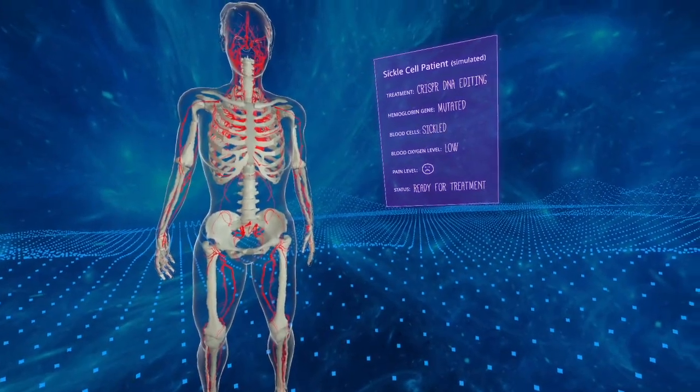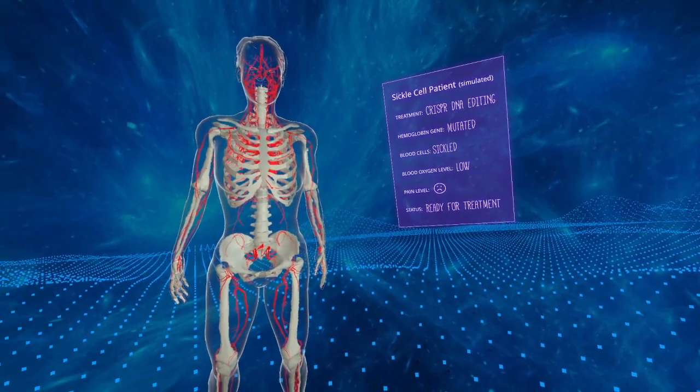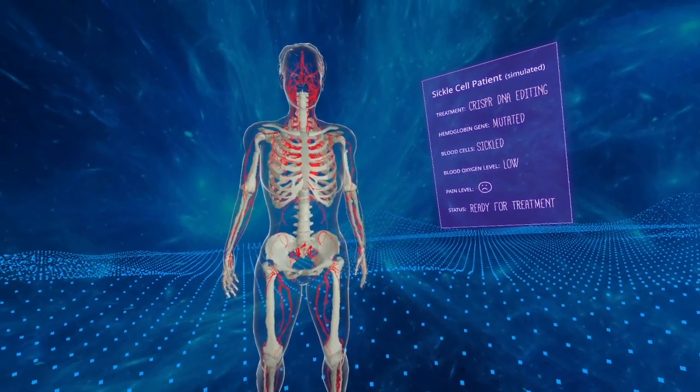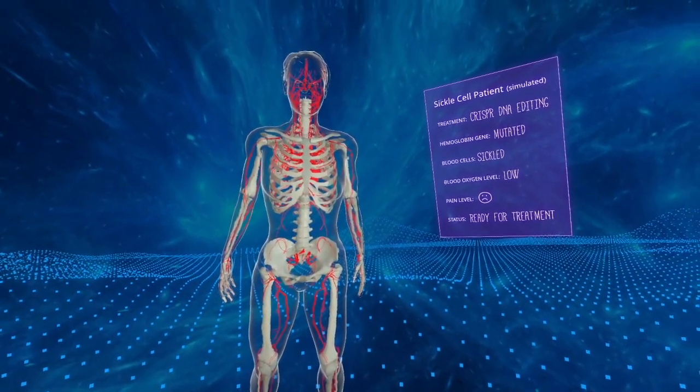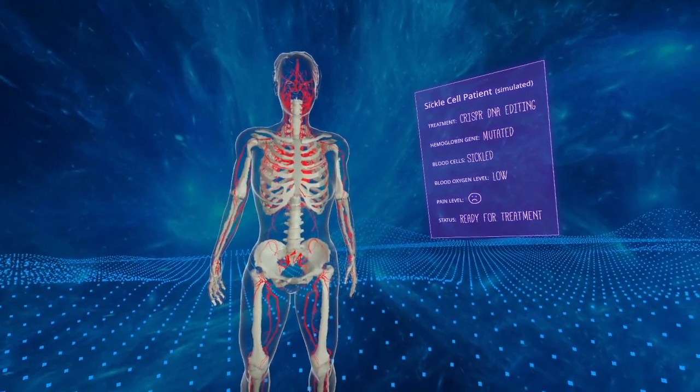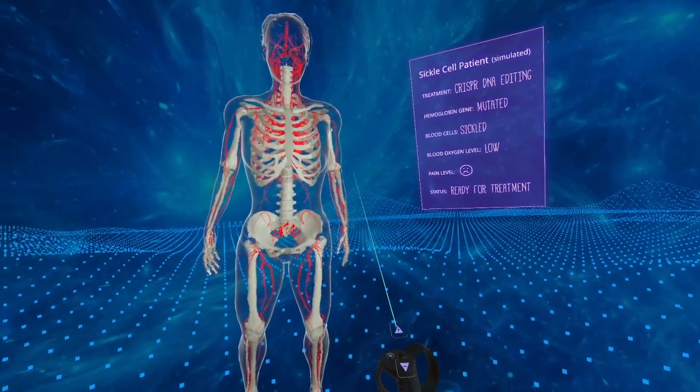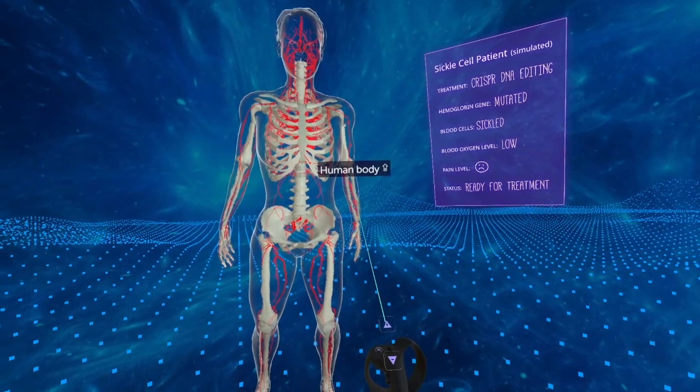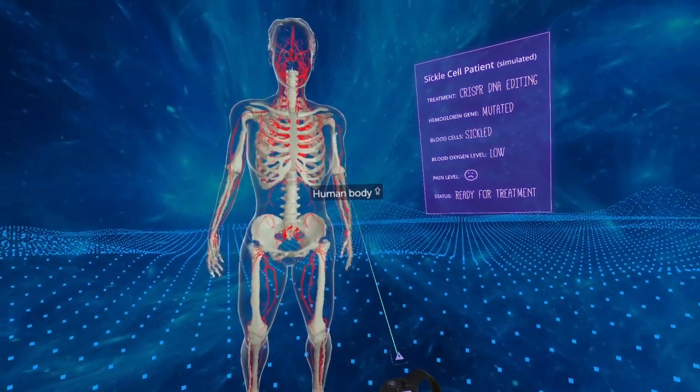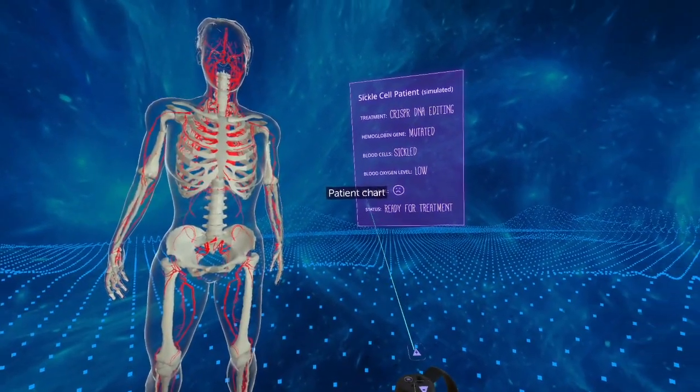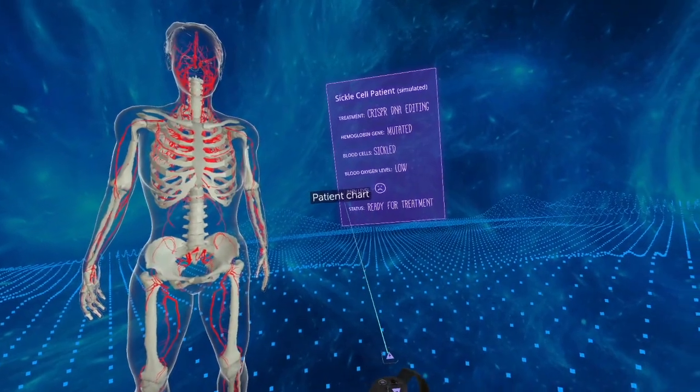Now that we've got everything set up, it's time to dive into the module. In front of you, you'll see a human body which is a simulation of someone with sickle cell disease. You'll notice that if you point at the body with the laser, you'll see a label come up - same goes for their chart.